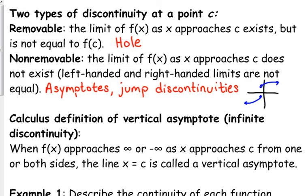This is an illustration of the jump discontinuity that occurs with a piecewise function, where the function will jump from one point to another. But those are your non-removable discontinuities — they are discontinuities, but not because of just one single point that's been removed. There's some other bigger issue.